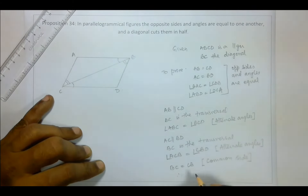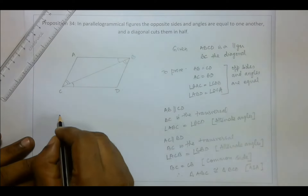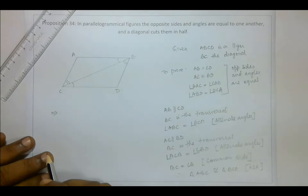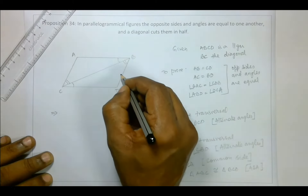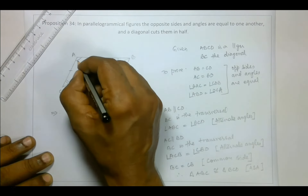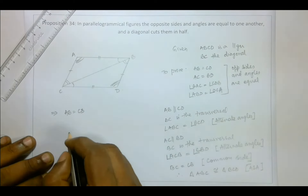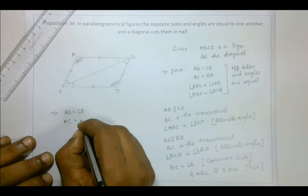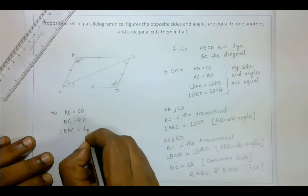And BC is equal to CB, the common side. Therefore, triangle ABC is congruent to triangle BCD. When we say these two triangles are congruent, it means the corresponding sides and angles are equal — so AB equals CD, AC equals BD, and angle BAC equals angle BCD.